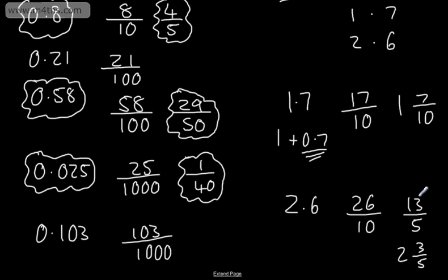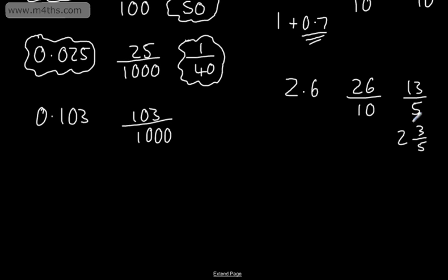There is a video on writing top-heavy or vulgar fractions, or if you like, improper fractions, as mixed numbers, which this is, and hopefully you've seen that, so you understand that part. We'll quickly run over that. All I've done here is simply said, how many fives go into 13? The answer is 2, and there's a remainder of 3.